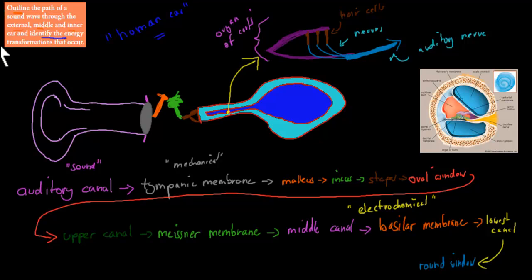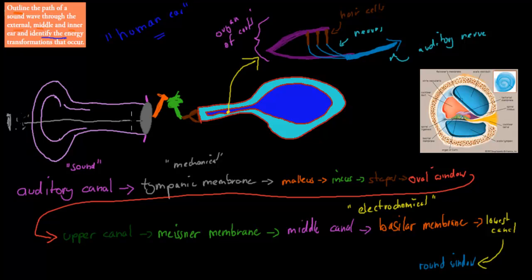First we talk about sound, because sound is obviously what our ears pick up. Sound will come in these pockets — these compression and rarefaction waves — that will travel into our ear. So it will go through the pinna, into the auditory canal, and then it will hit the tympanic membrane.